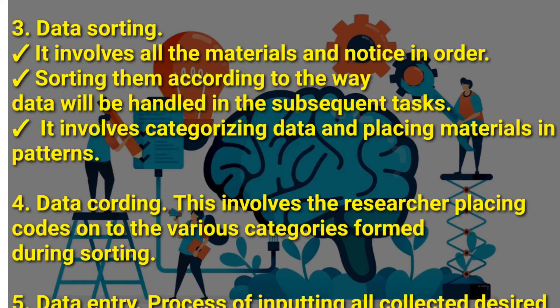The fourth stage is called data coding. Data coding involves the researcher placing codes on the various categories formed during sorting, so that the data can be understood by only the people that are meant to understand it.